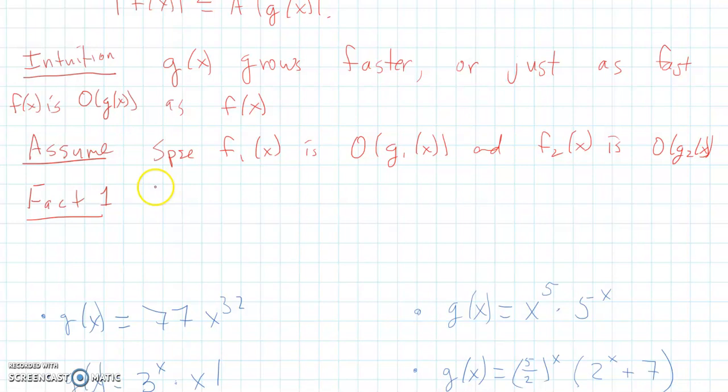Fact one is f1 of x plus f2 of x, so I add the two functions together. This is big O of the maximum of g1 of x and g2 of x. So when you're adding two functions together, you only have to pay attention to the biggest bounding function, to the biggest big O function when you're adding them together.